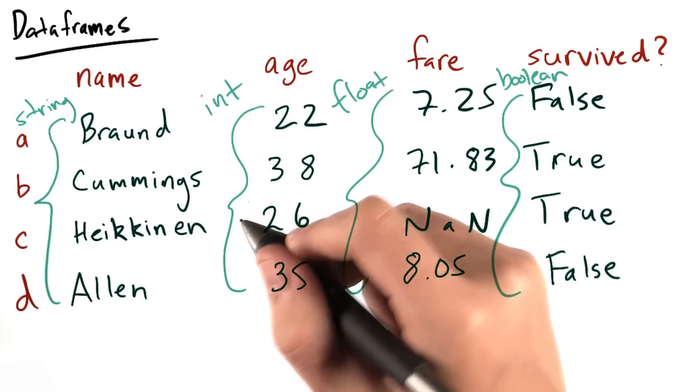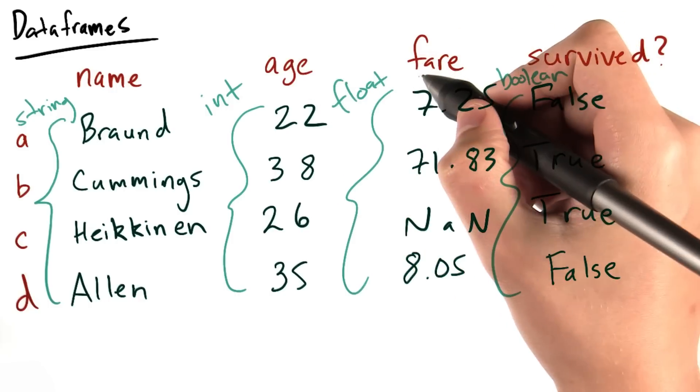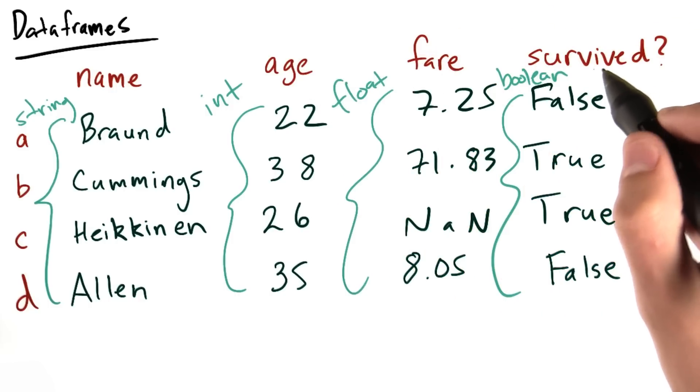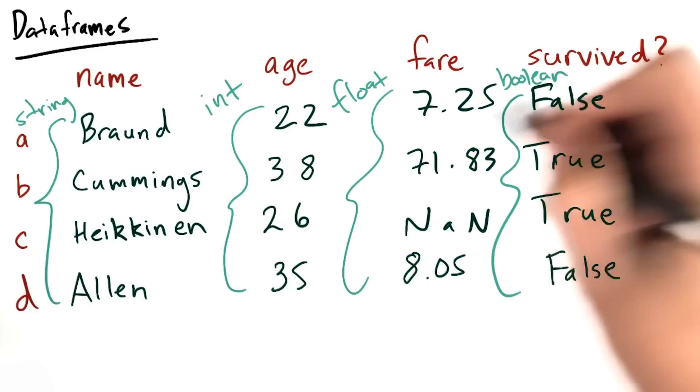Note that there are numerous different columns: name, age, fare, and survived, and that these columns all have different data types. Age is all integers, survived is all boolean, etc.